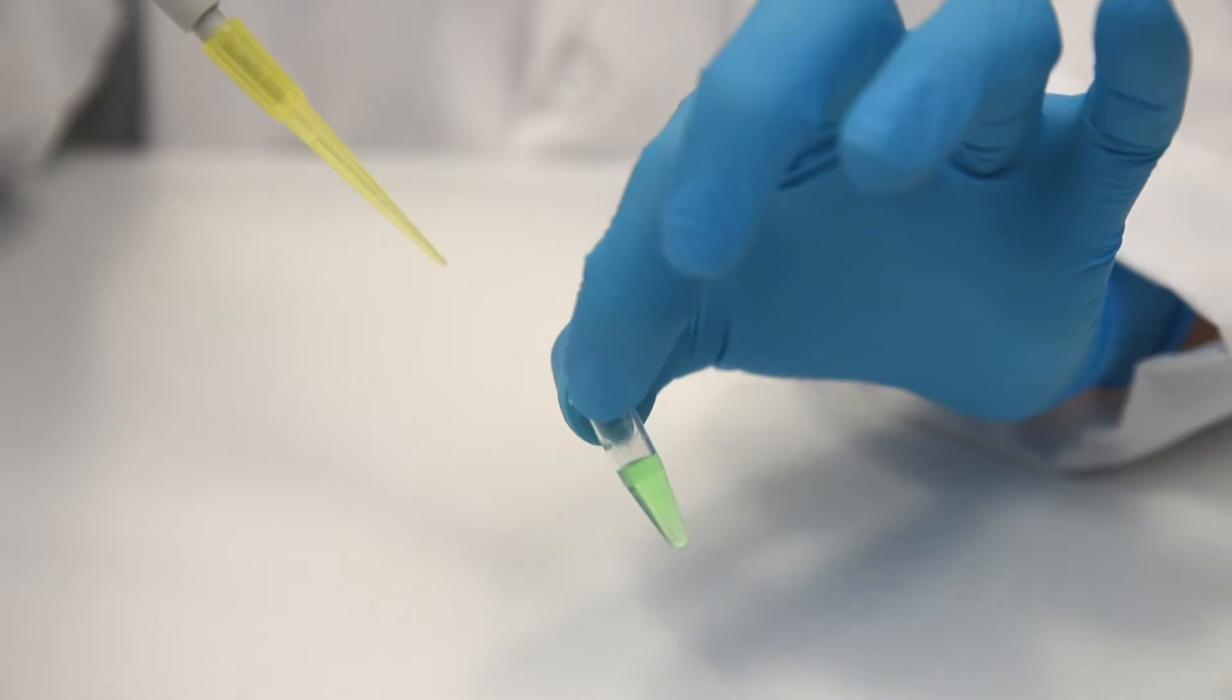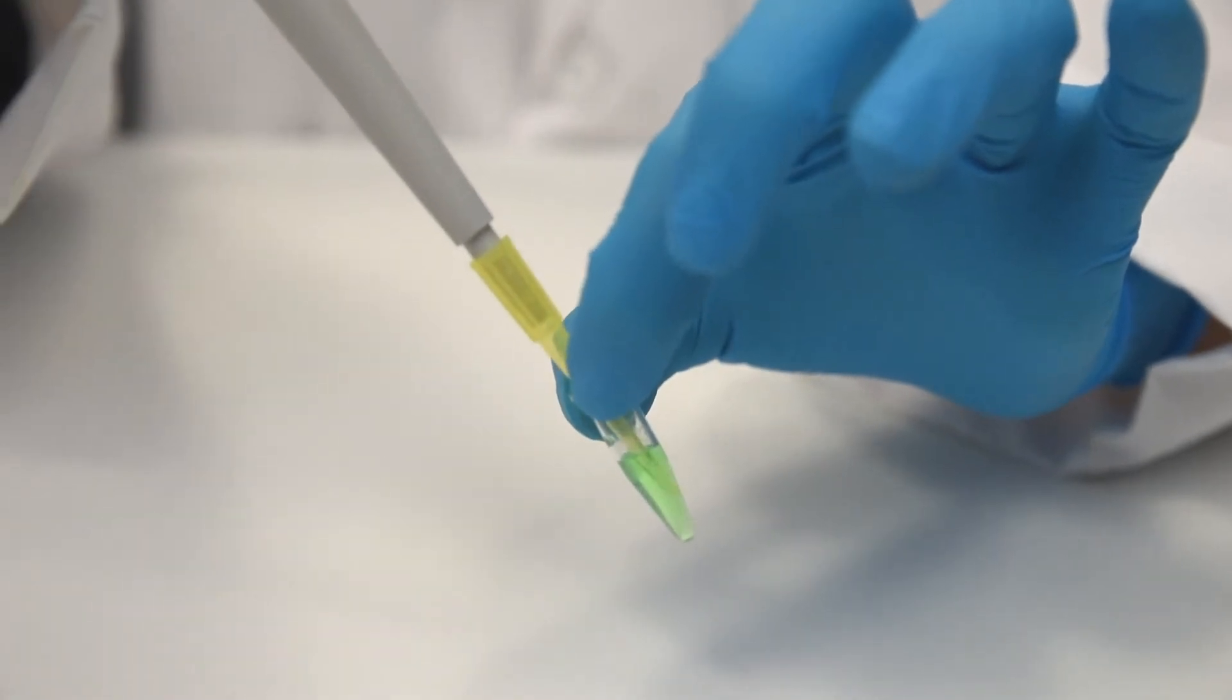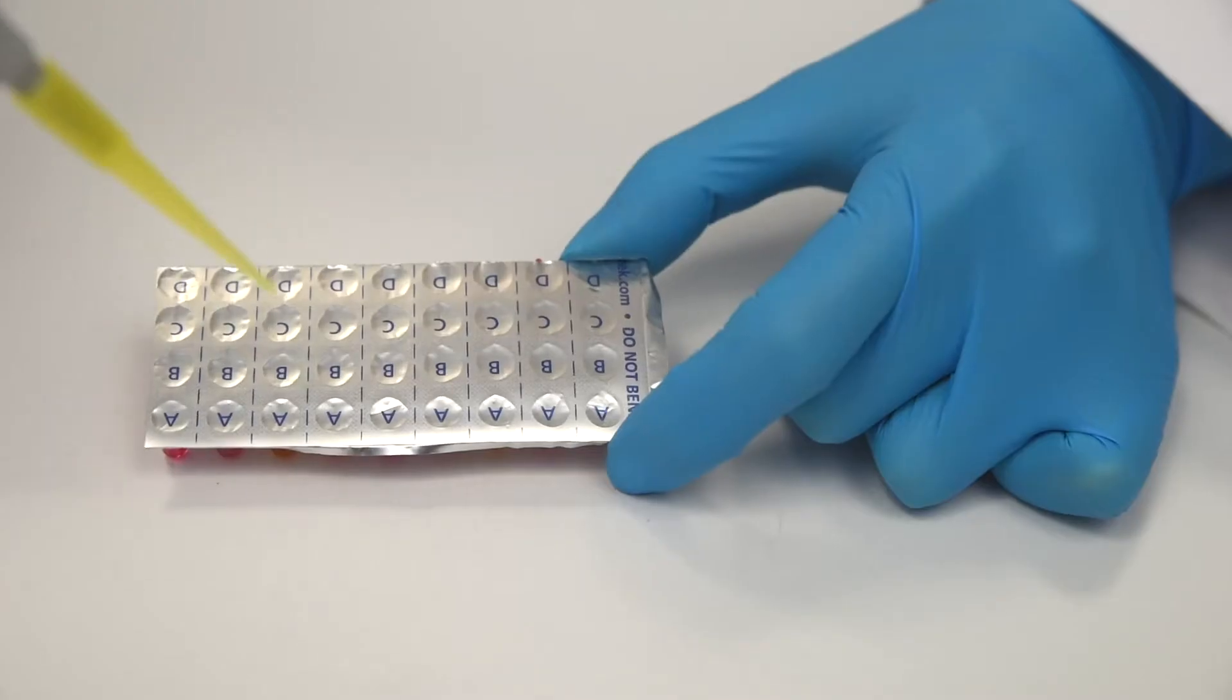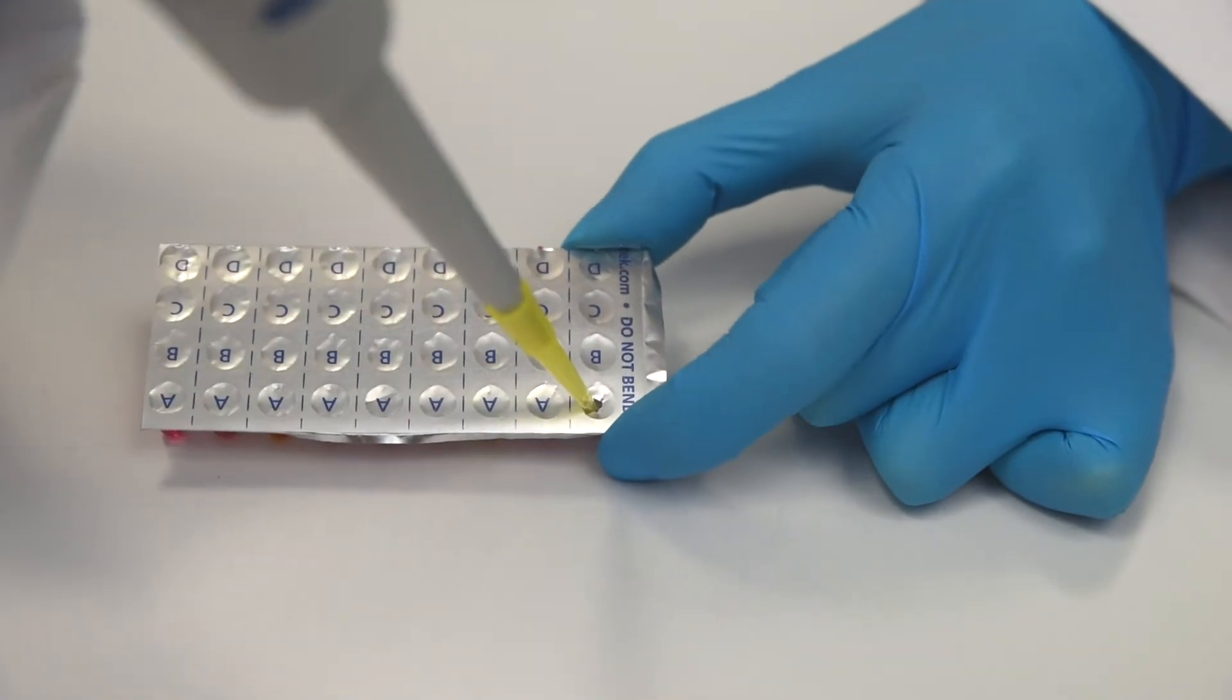Step 4. Using a fresh micropipette tip, add 5 microliters of control cDNA to the top left well of the quick strip plate by punching the tip through the foil.